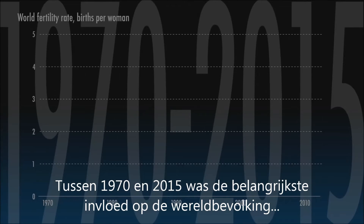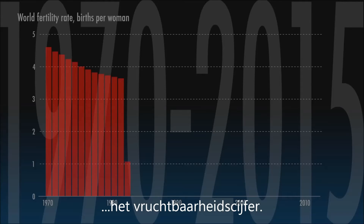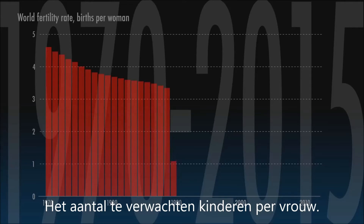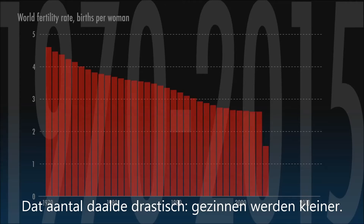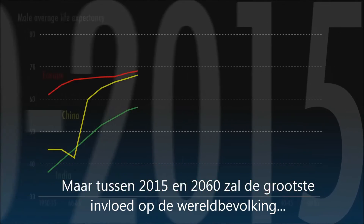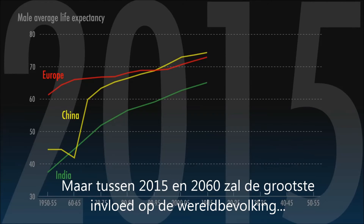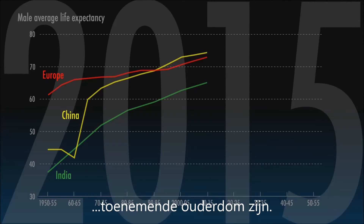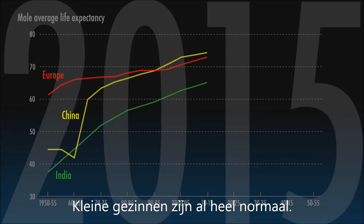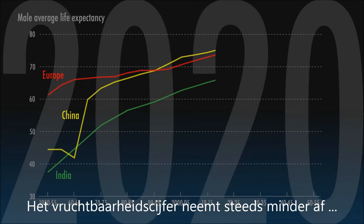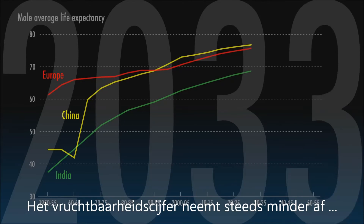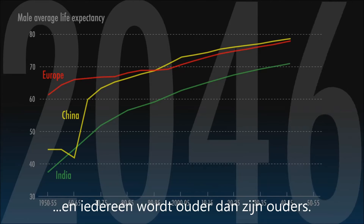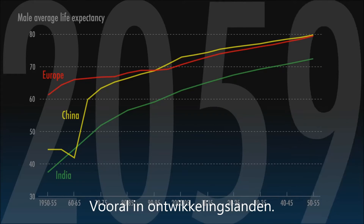In 1970 to 2015, the dominating influence upon the global population was the fertility rate — that's the number of children a woman can expect to bear during her lifetime. It fell dramatically over the period, meaning that the world shifted from having larger to smaller families. But in 2015 to 2060, the biggest influence upon the population will be ageing. Small families are already the norm. The fall in fertility is slowing down, and now everyone's living longer than their parents, dramatically so in developing countries.